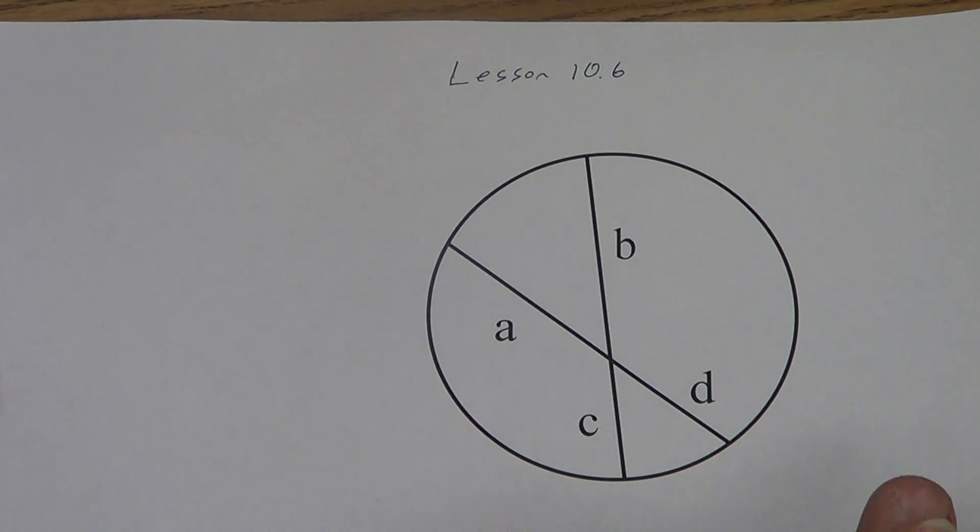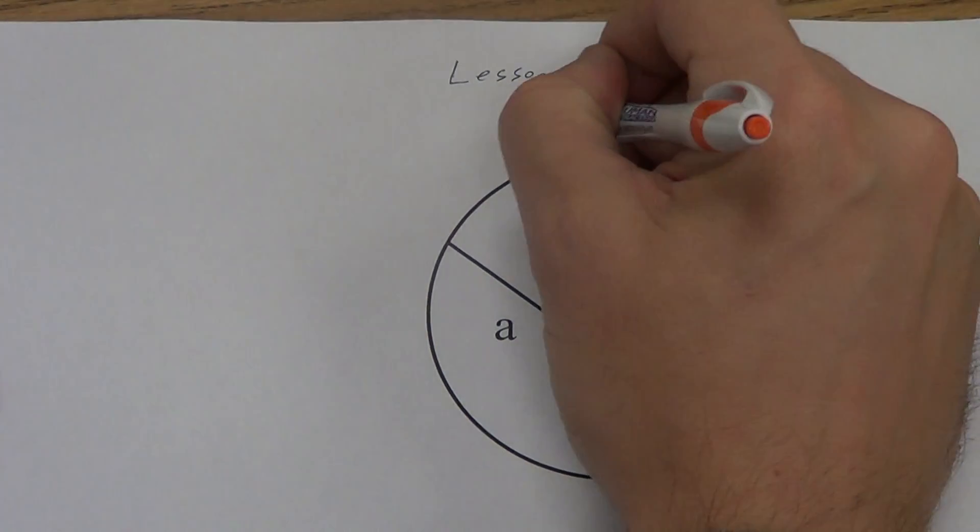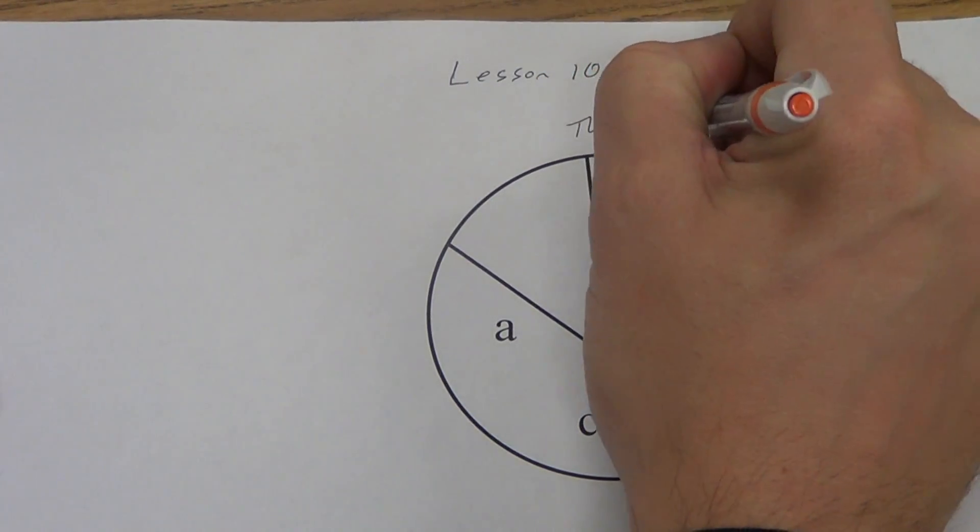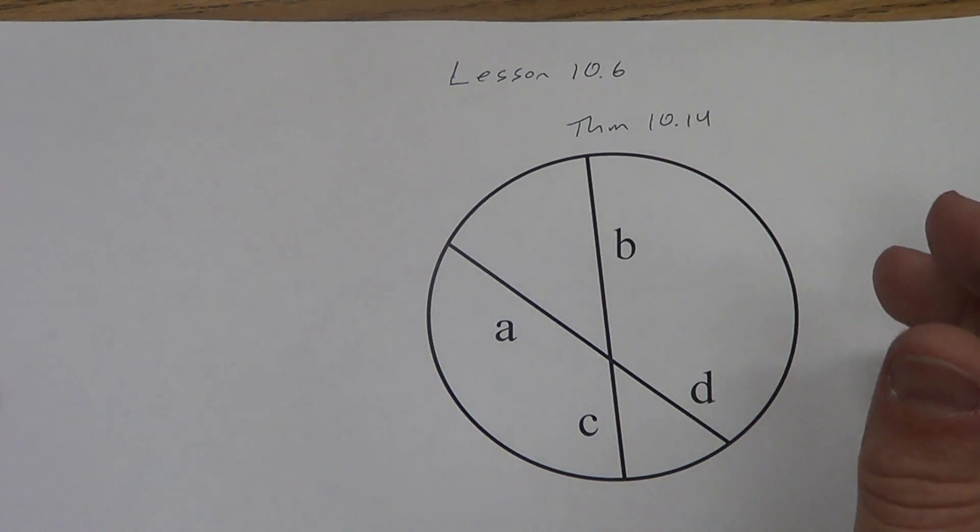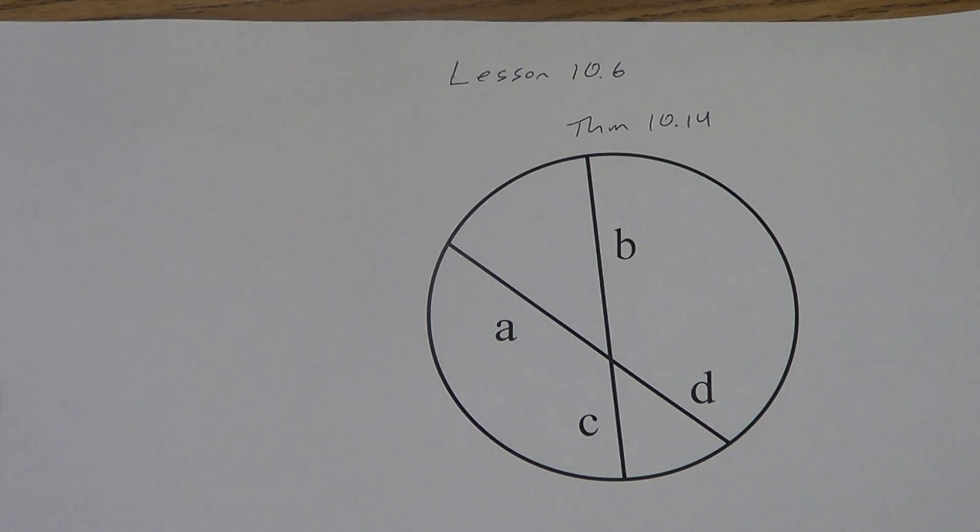They're kind of long. The first theorem, this is theorem 10.14, and then there's a 10.15 and a 10.16. In your book, this one's three and a half lines long. Some of the other ones are like five lines long. I'm going to read them to you out of your book. Don't try to write them down. We don't copy them down. I'm going to explain to you a much shorter way of doing each of them.